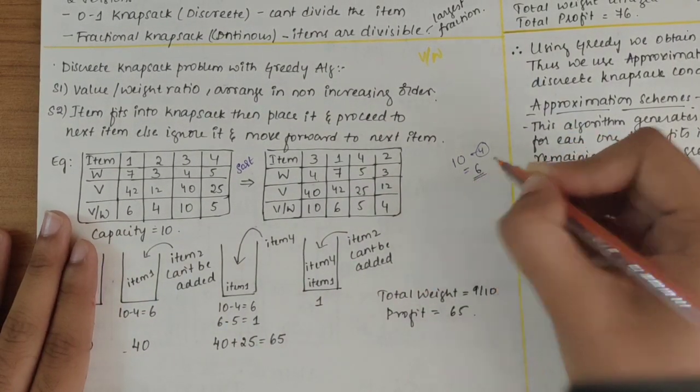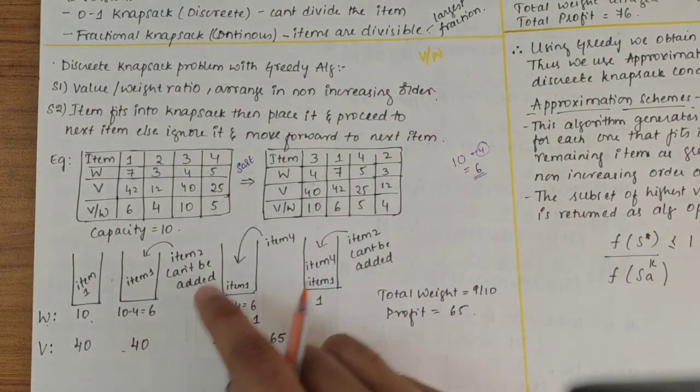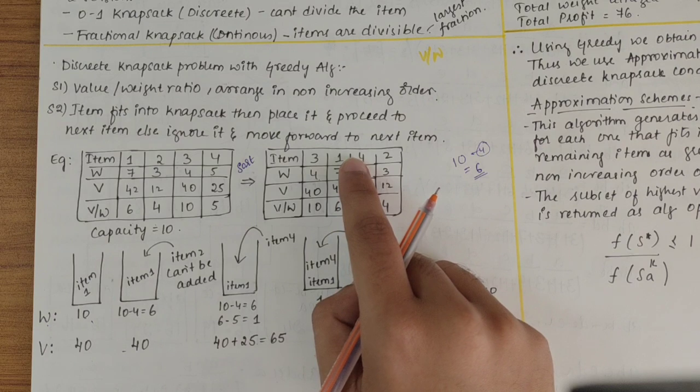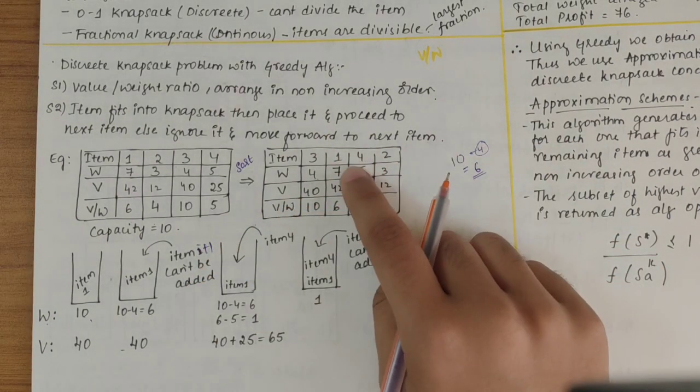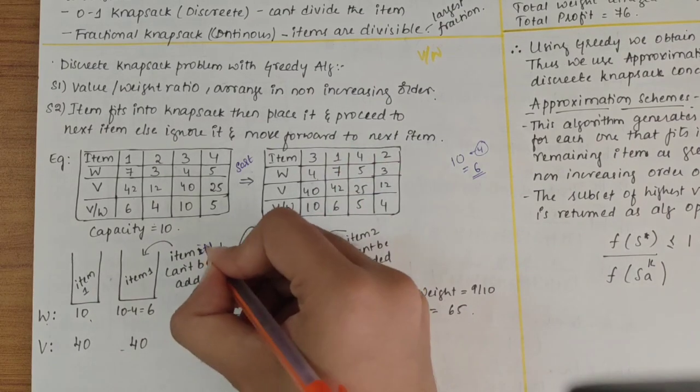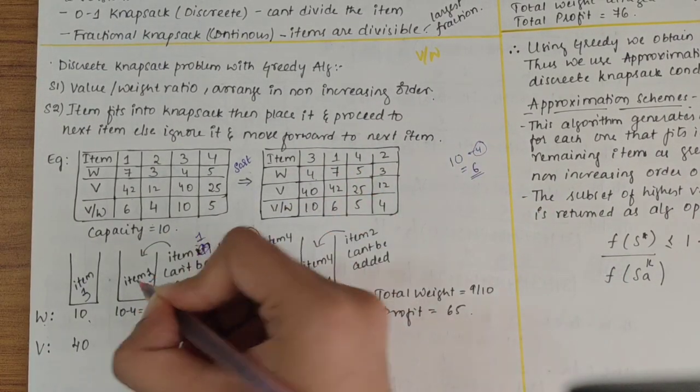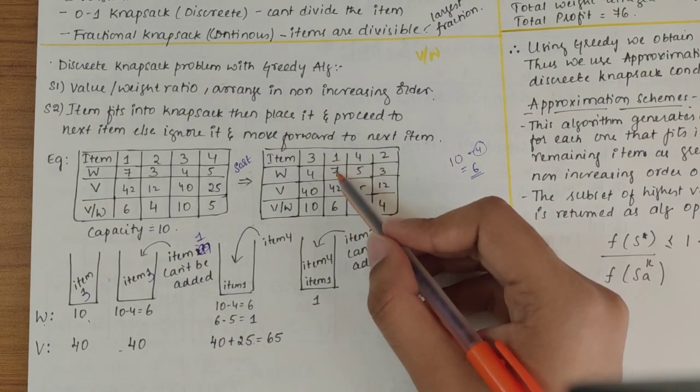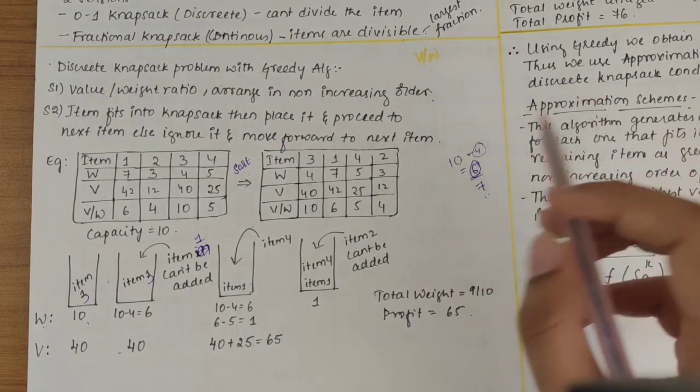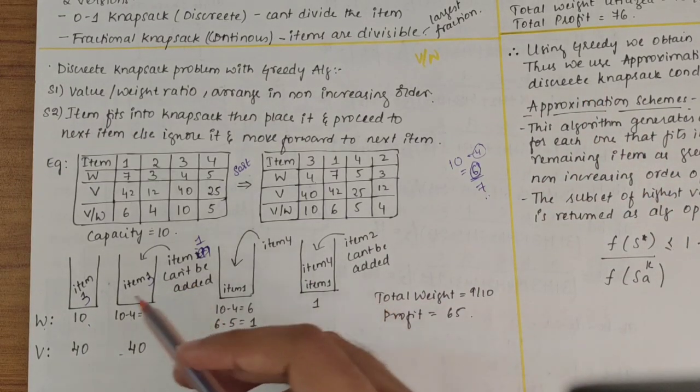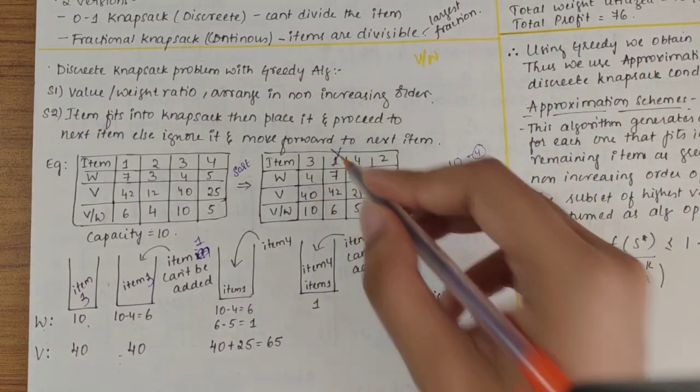Coming to the next item, I have item 1. Item 1 has weight of 7, but here capacity is 6. Can I store 6 and 7? No, it cannot be added. So the value would be the same and weight would be the same. I will not store item 1.